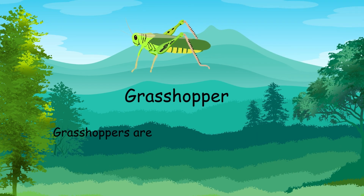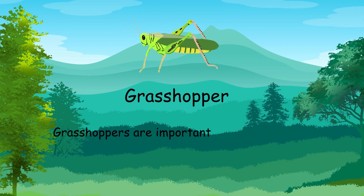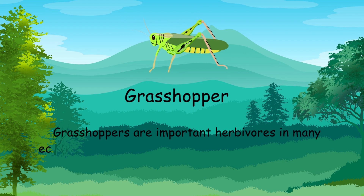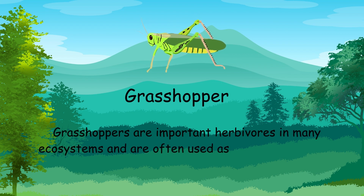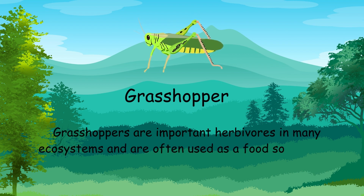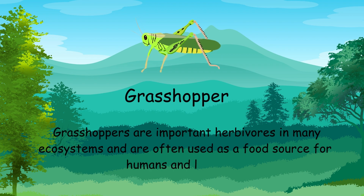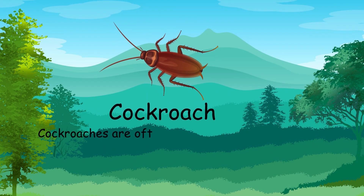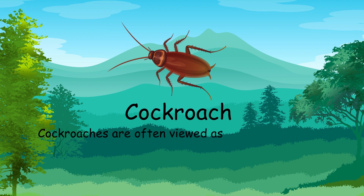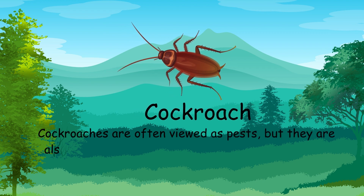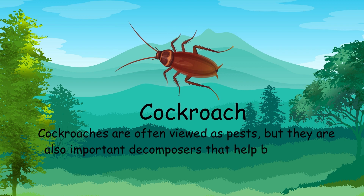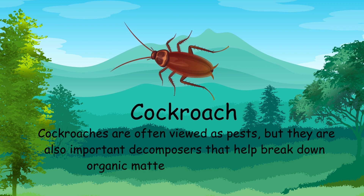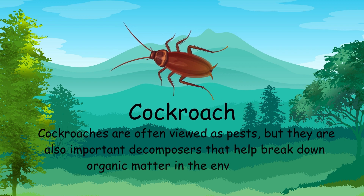Grasshoppers are important herbivores in many ecosystems and are often used as a food source for humans and livestock. Cockroaches are often viewed as pests, but they are also important decomposers that help break down organic matter in the environment.